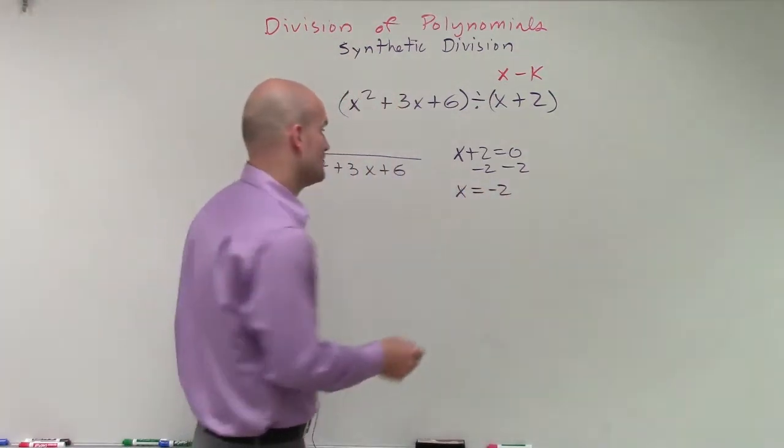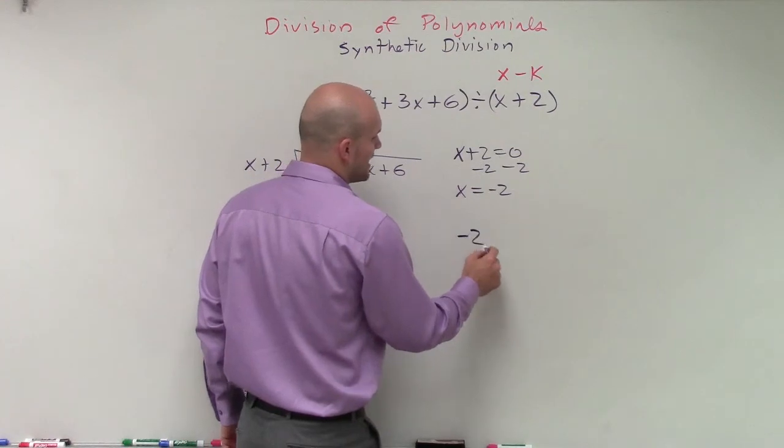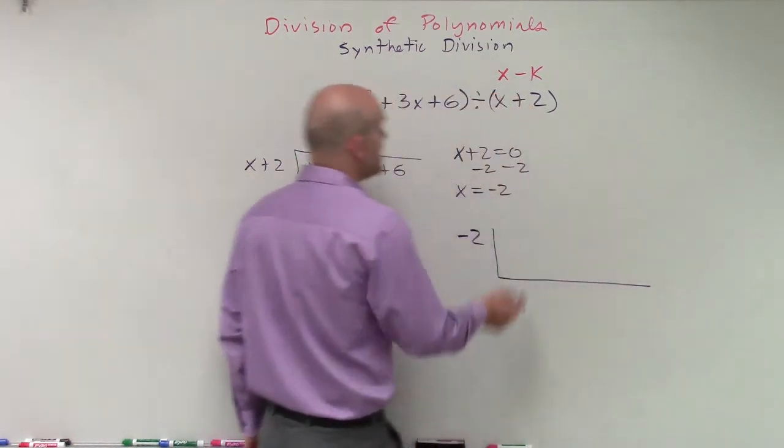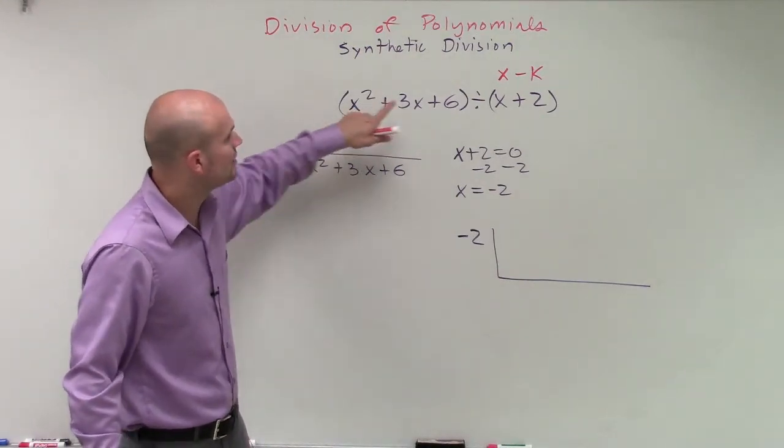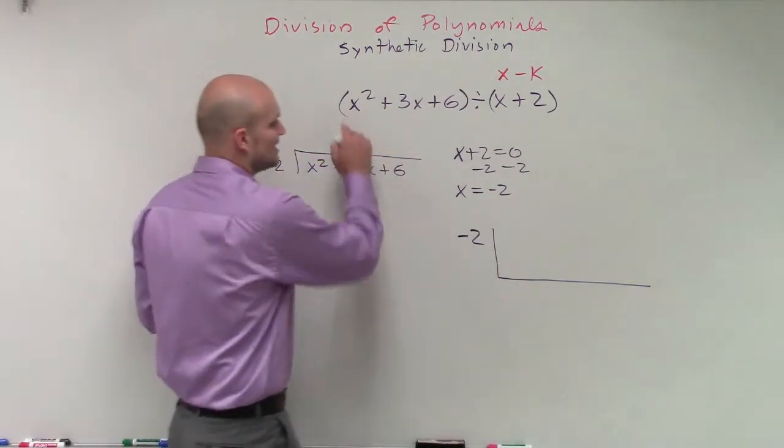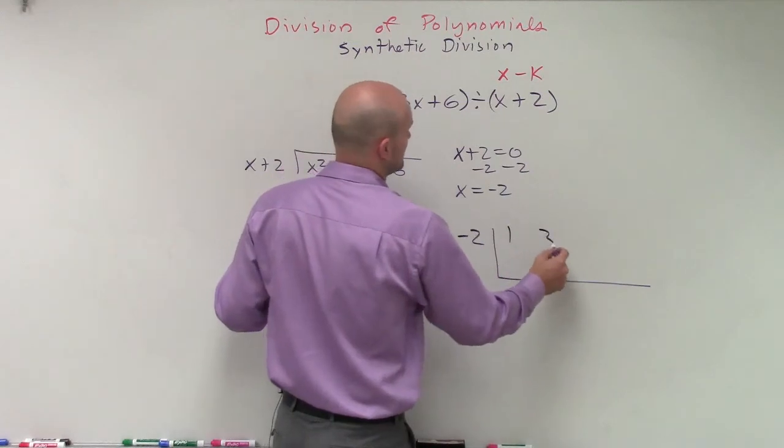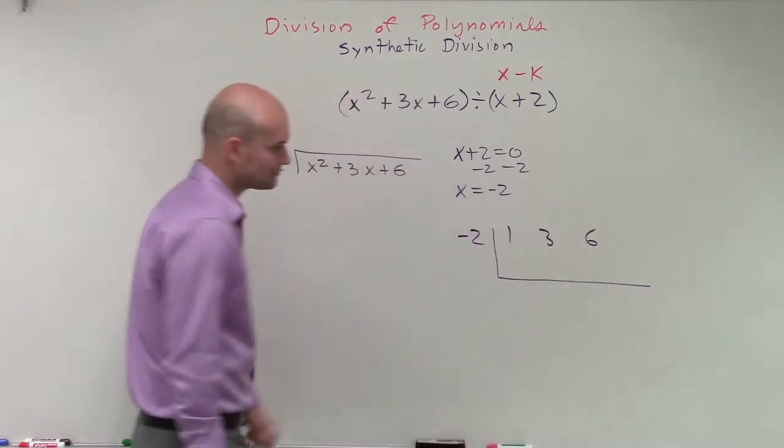And that's going to be the value that we're going to use on the outside for our synthetic division. Then what we do is we take the coefficient of each one of our terms. So in this case, we have a 1, a 3, and a 6.